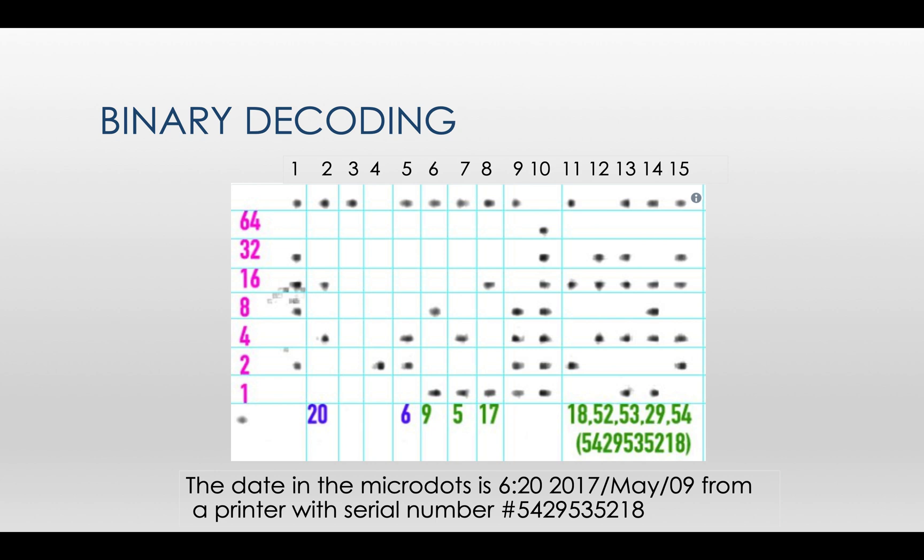But how can we use these binary values? Simple enough, just calculate the sum of these binary values in each column. For instance, the sum of the second column is 4 plus 16 equals 20. Thus we have 20 in the second column, 6 in the fifth column, 9 in the sixth column, 5 in the seventh column, 17 in the eighth column, and so on.